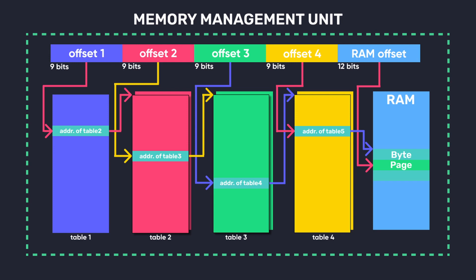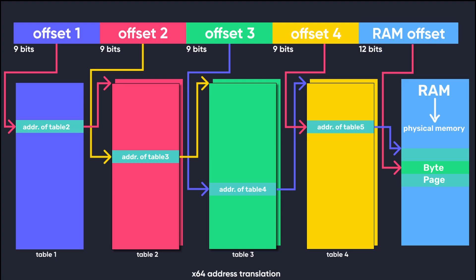This translation of virtual memory addresses to physical memory addresses is done by a special component of Windows called the memory management unit. This is a four-stage process in which at each stage some of the bits of the virtual address point to a new table, which can be thought of as a structure with entries that also point to the next table, and this process continues until finally the address is translated into a physical memory address.